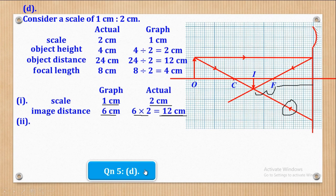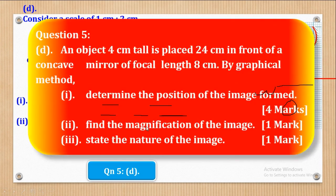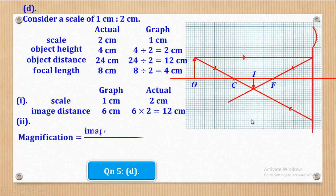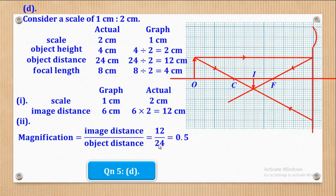Now Roman numeral 2: find the magnification of the image. Magnification equals image distance over object distance, therefore magnification = 12 ÷ 24 = 0.5.